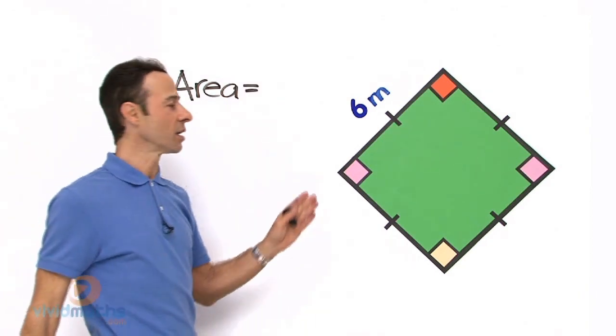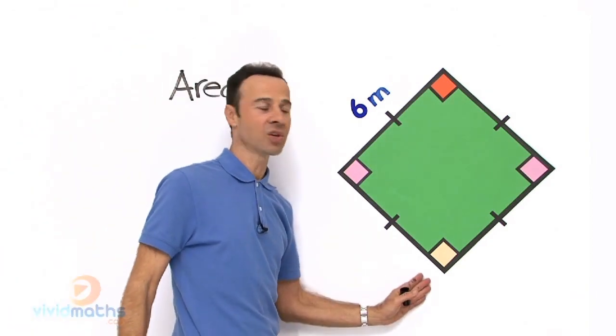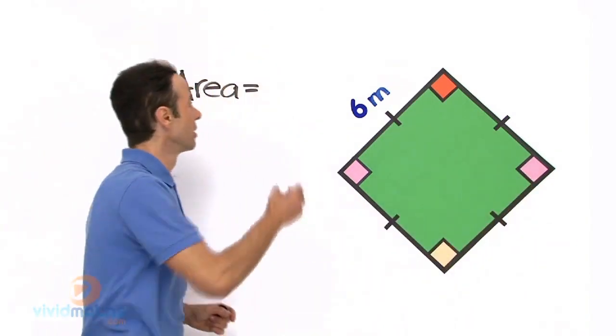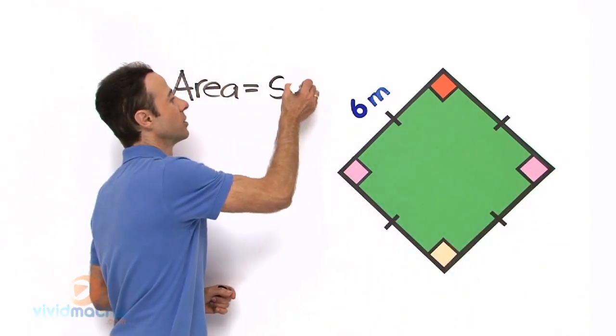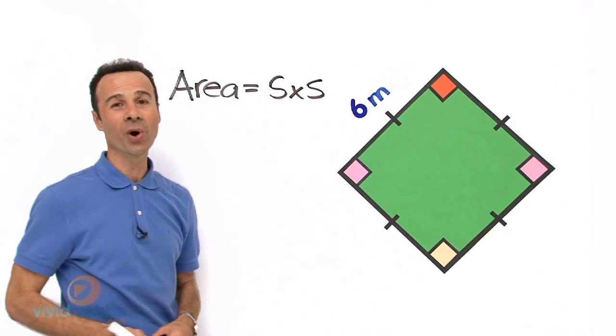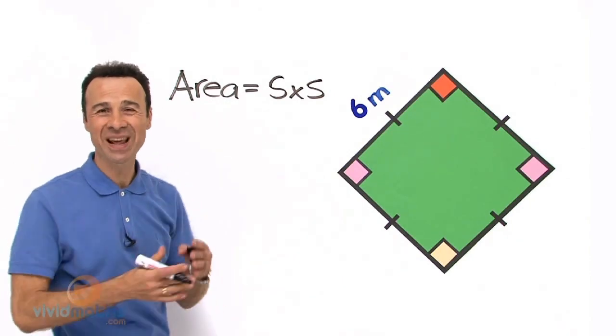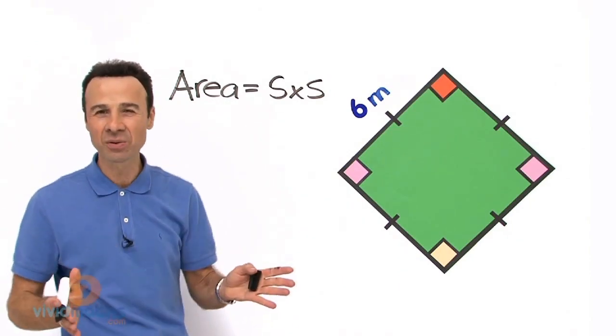Now because it is a square, it means this side times that side, so it is side times side, or if you want, length times breadth, although it does not have length and breadth, they are all identical, they are the same.